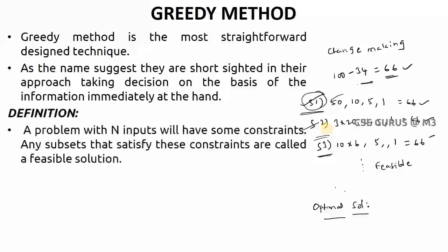The definition is: a problem with n number of inputs will have some constraints. Here you have n number of inputs, n number of currency notes. What is my constraint here? You need to use these currency notes and the constraint has to be satisfied that the total sum of this currency which will be given will be equals to 66.